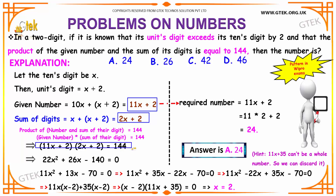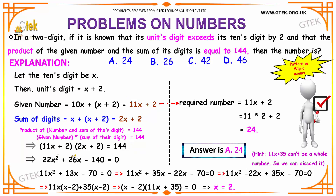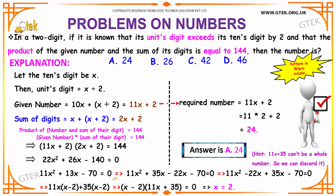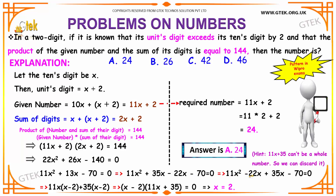That gives you your first equation to solve. Multiplying the terms, you get 22x squared plus 26x minus 140, which is equal to 0. Simplifying it further, you get 11x squared plus 13x minus 70 is equal to 0, which is nothing but 11x squared — 13 can be written as 35 minus 22 — x minus 70 is equal to 0. You are rearranging 11x squared and 22x as you can resolve them into common factors, and 35x minus 70 is equal to 0.